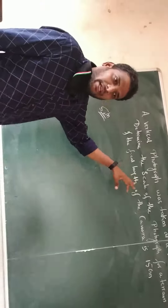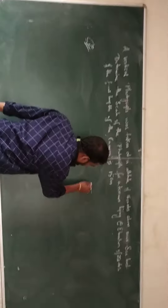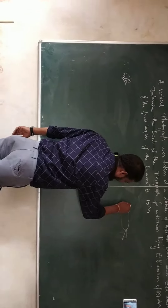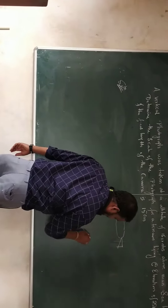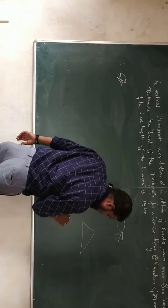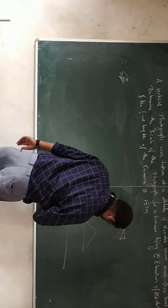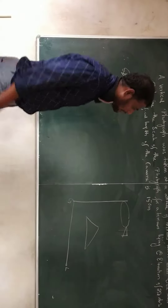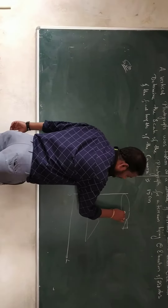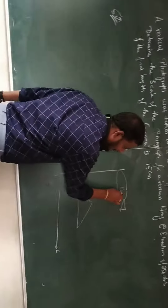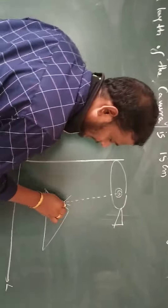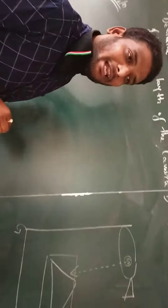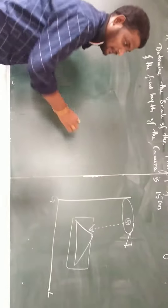A photograph was taken, and this is the S-graph. The photograph was taken of the object here, and this is the ground level. Aerial photography means we are taking this photograph by loading the camera in the aeroplane and taking the photo of this particular ground for the aerial photogrammetry survey.